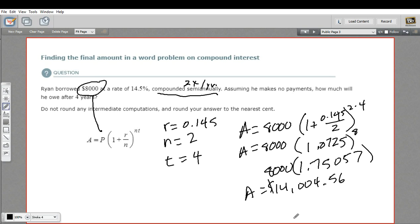So that's a lot of money. $8,000 ballooned up to over $14,000, just over four years. If you can avoid taking out a loan like that, it's probably a good idea.